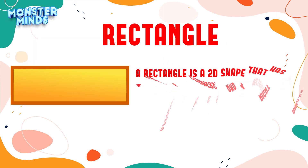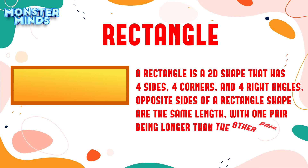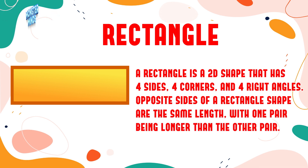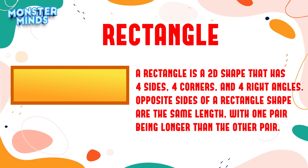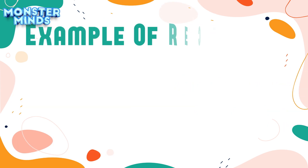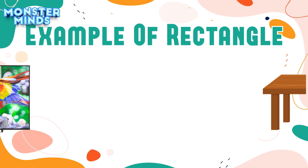Rectangle: A rectangle is a 2D shape that has four sides, four corners, and four right angles. Opposite sides of a rectangle shape are the same length, with one pair being longer than the other pair. Example of Rectangle.